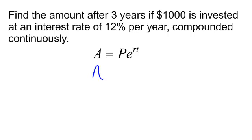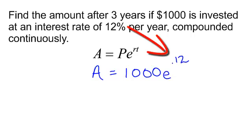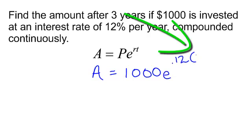How much money will I have? Well, I am going to invest $1,000, that is my principal, e to the r, 12%, that is 0.12. We should probably say 0.12 times how many years am I going to leave it there? That would be three years.